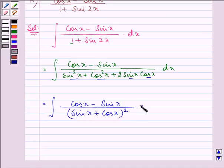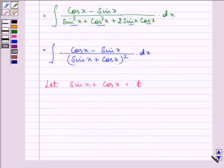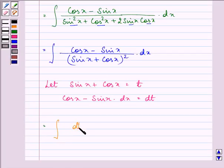Now let sin x plus cos x be equal to t. So cos x minus sin x into dx will be equal to dt. So further, we can write it as, in the numerator we have dt and in the denominator we have t.